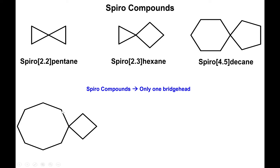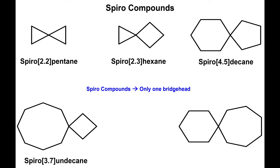In another example, we have a total of seven carbons on the left side and three carbons on the right side, so this is spiro 3.7. Three plus seven is ten, plus one is eleven, so this is spiroundecane. In the last example, we have five carbons on the left side and six on the right side, so this is spiro 5.6. Five plus six is eleven, eleven plus one is twelve, so this is spirododecane.